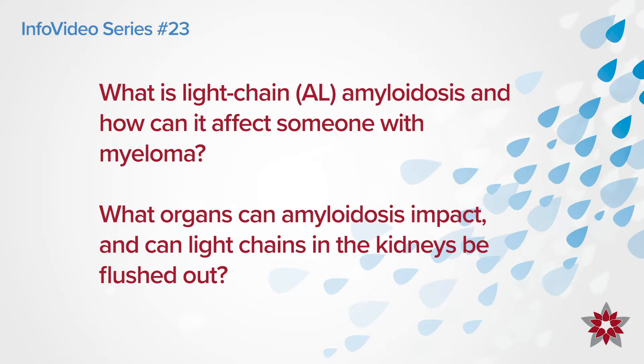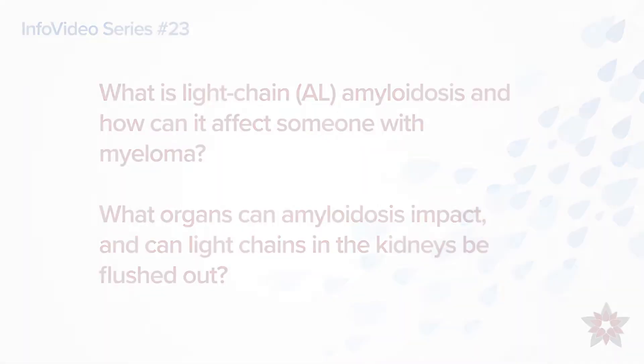I'll start answering that question by first explaining a little bit about what amyloid is. Amyloidosis is a problem where you have a normal protein that, somewhere along the way — usually because of its blueprint changing — it turns into a very sticky protein, and these sticky proteins can start to accumulate in different organs of the body, eventually causing them to malfunction and fail.